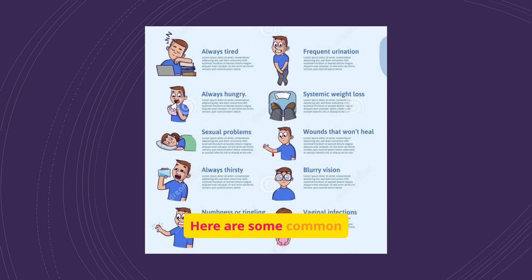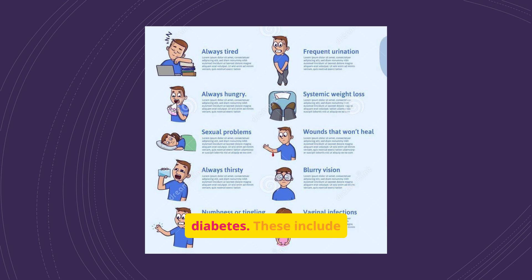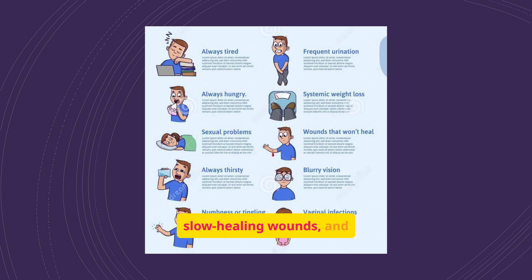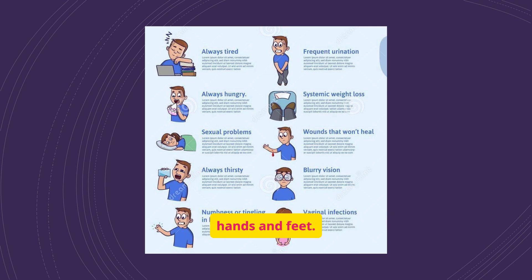Here are some common symptoms associated with diabetes. These include fatigue, frequent urination, increased hunger and thirst, unexplained weight loss, blurry vision, slow healing wounds, and numbness or tingling in the hands and feet.